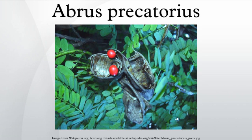Uses: The seeds of Abrus precatorius are much valued in native jewelry for their bright coloration. Most beans are black and red, suggesting a ladybug, though other colors are available. Jewelry making with jiquirity seeds is dangerous, and there have been cases of death by a finger prick while boring the seeds for bead work. In Trinidad in the West Indies, the brightly colored seeds are strung into bracelets and worn around the wrist or ankle to ward off jumbies or evil spirits and malya, the evil eye.